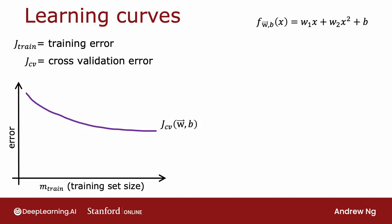Now let's plot JTrain of W, B — what the training error looks like as the training set size gets bigger. It turns out that the training error will actually look like this: as the training set size gets bigger, the training set error actually increases.